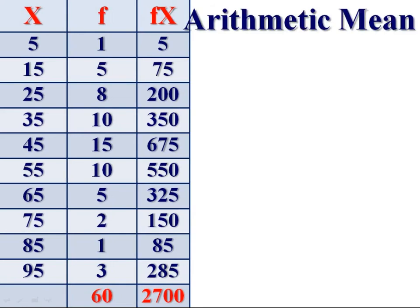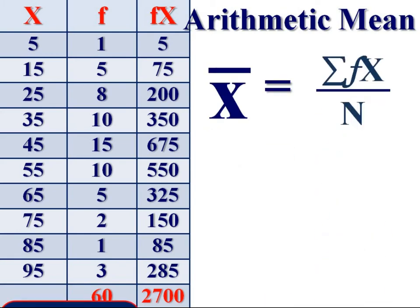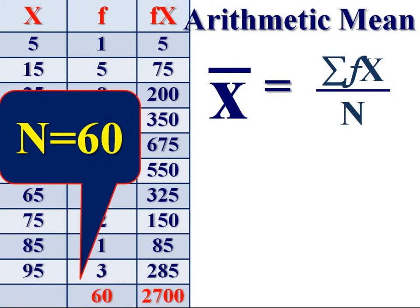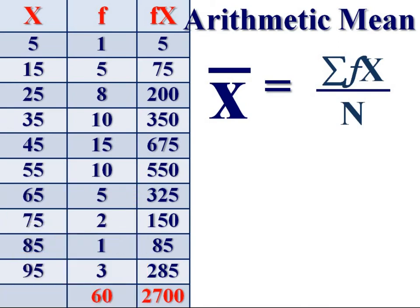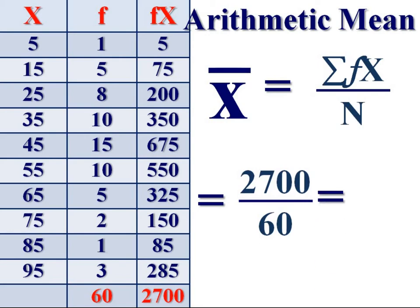Compute arithmetic mean. X bar is equal to sigma fX divided by n. n is equal to 60. Sigma fX is equal to 2700. Therefore, arithmetic mean sigma fX, 2700 divided by n, 60 is equal to 45.